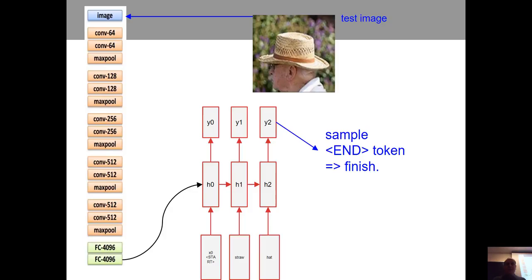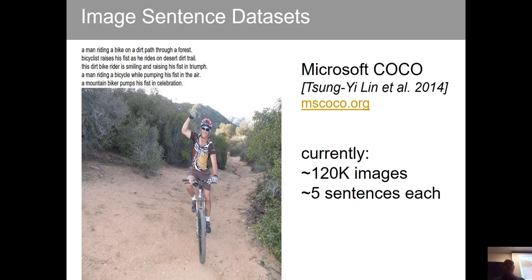Of course, you do the training for this recurrent neural network on images, and there exist a lot of datasets. One popular dataset is called COCO — a Microsoft dataset with images on the order of 120K images, each with five associated sentences. They use Amazon Mechanical Turk, having people write five sentences for every image. This training data has been available since 2014. So this image has five sentences associated with it, and you train on this image.